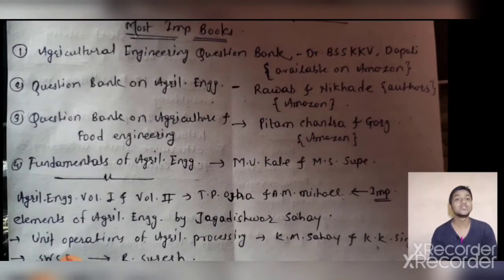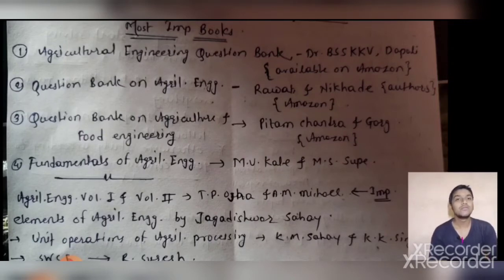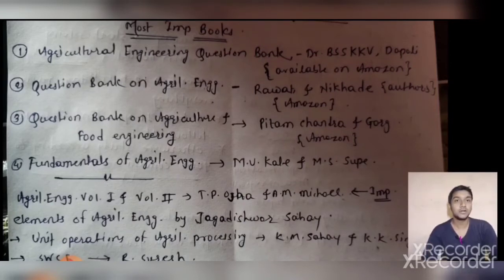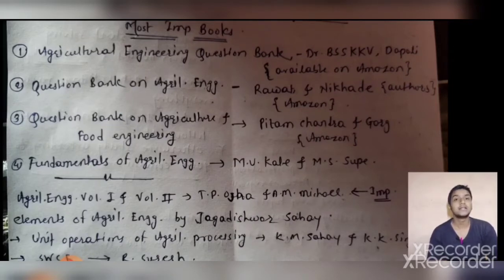Here is the detailed book list — you can pause the video and check it one by one. The first essential book is 'Agriculture Engineering Question Bank' by Dr. Basat Sound, co-authored, and is easily available on Amazon or other online platforms. The second one is the 'Question Bank on Agriculture Engineering' by Ravat and Nikade.